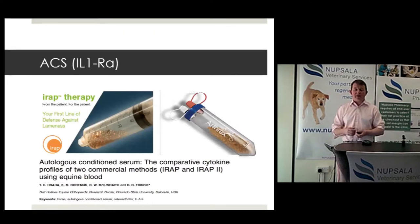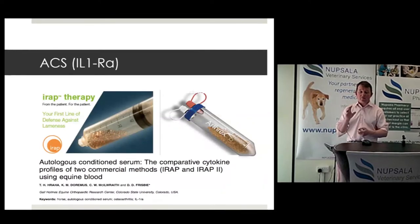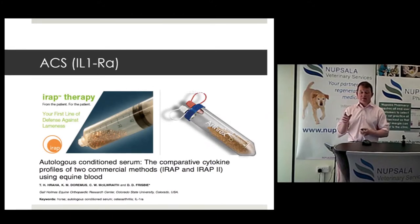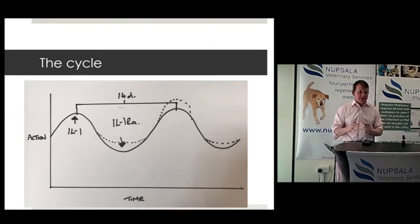IRAP or ACS — the autologous conditioned serum — comes in two forms on the market: the original IRAP and versions such as Arthrox. There are papers on these; if you want to search them, look for Wayne McElroy and Dave Frisbee's papers. Both are well worth reading to understand how this technology works and what you're trying to achieve by using ACS in the disease process.